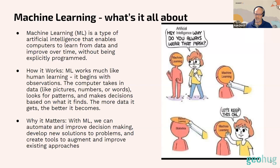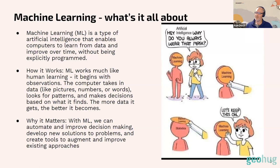Machine learning can be really important. It can help automate boring repetitive tasks, help find solutions to complex problems with very large data sets, and integrate high-dimensional data — lots of different types — that we as people find very hard to combine. This gives us the opportunity to create tools that augment and improve existing approaches. It's not a silver bullet, but pointing it at the right specific question, it can be really powerful.